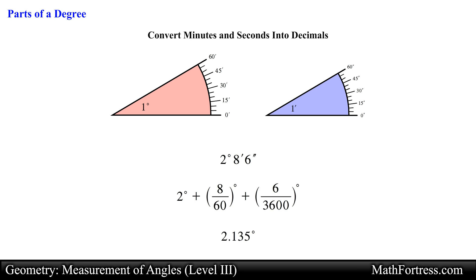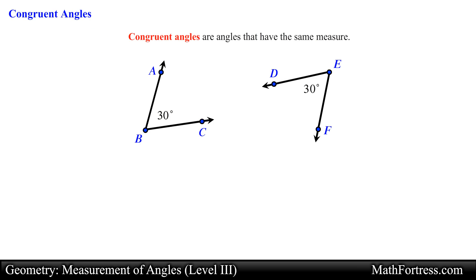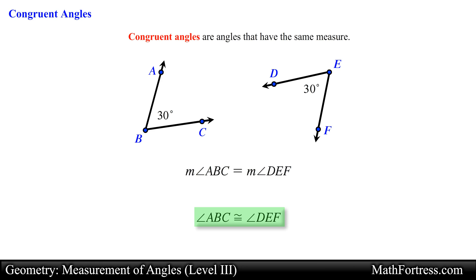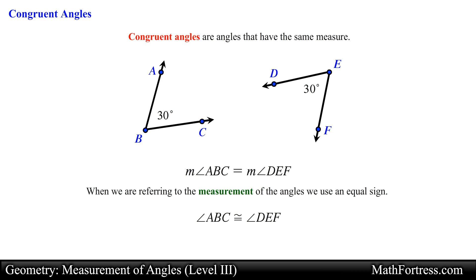Alright, and this is how you deal with parts of a degree. Let's end the video by going over congruent angles. Congruent angles are angles that have the same measure. In the following diagram, the measure of angle ABC equals the measure of angle DEF, so we can write angle ABC is congruent to angle DEF. Notice that when referring to the actual measurement we use an equal sign, and when referring to the figures we use the congruent symbol.